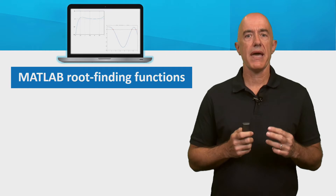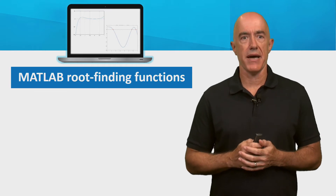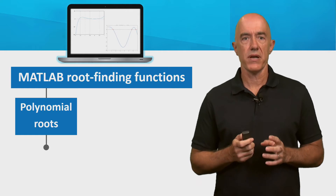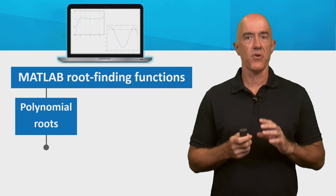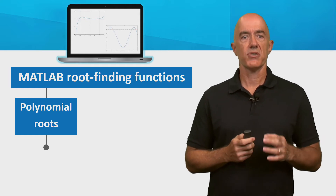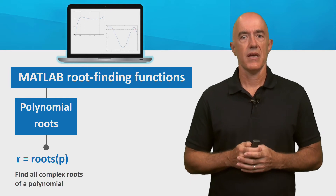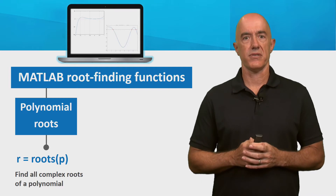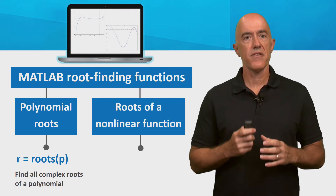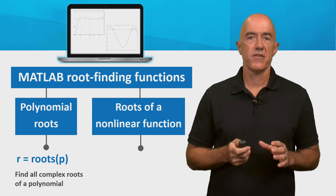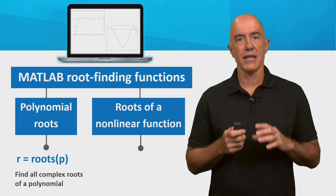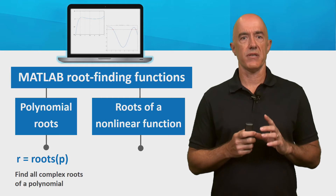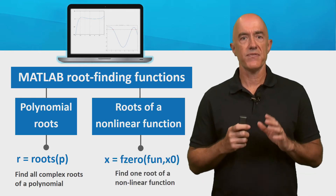There are two main root finding functions in MATLAB. There is a function that you can use to find all the real and complex roots of a polynomial. This function is called roots, and you only need to give it the polynomial's coefficients. There is another function that you can use to find one real root of a nonlinear function, and it is called fzero.